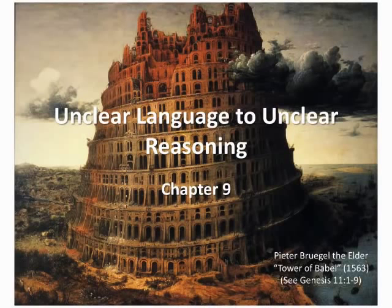Take a look at this striking image. One of the reasons I chose it for this learning module is that it depicts the Tower of Babel, the ancient symbol for human linguistic confusion. It was painted by Peter Bruegel the Elder in 1563, and it's an appropriate starting point for Chapter 9.